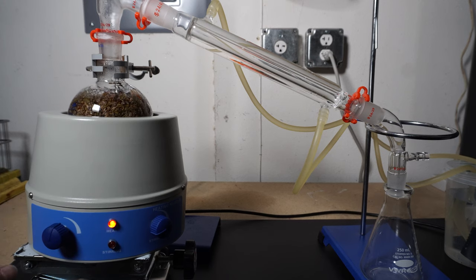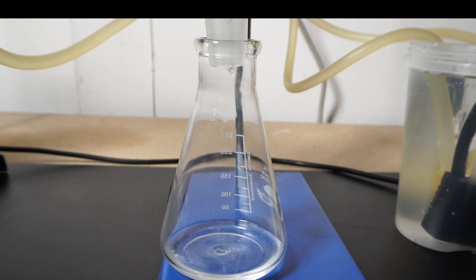Once the water is boiled nicely I turn down the heat slightly as not to damage the oils I am bringing over with high heat. Once I turn it down we can see I'm getting a pretty nice drip in my receiving flask.